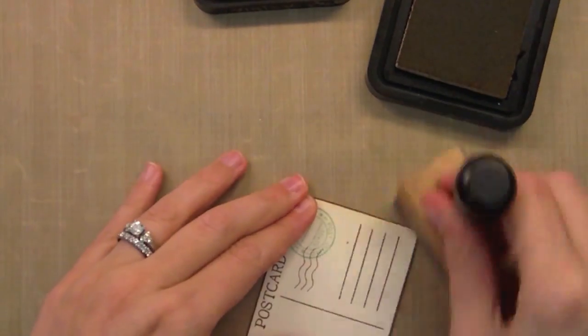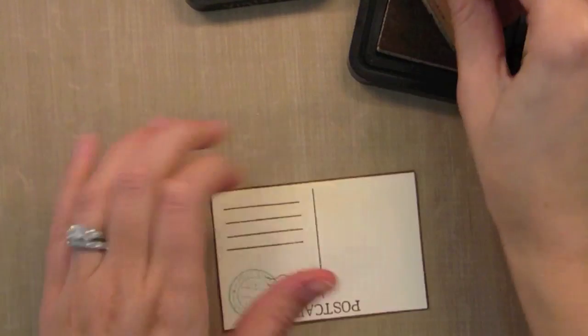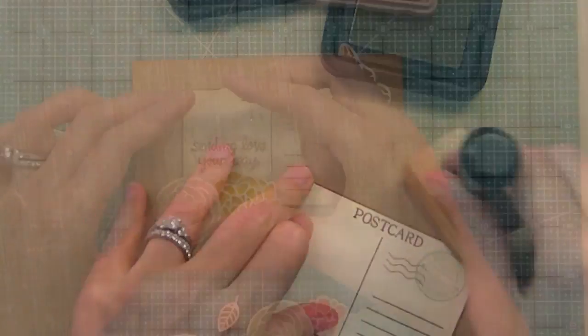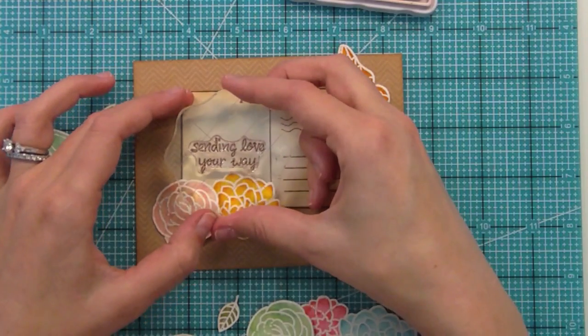I decided to go ahead and add some of the distress inks in the antique linen and vintage photo so that it coordinates with my card base that I did earlier and so it looks really good with the flowers too.